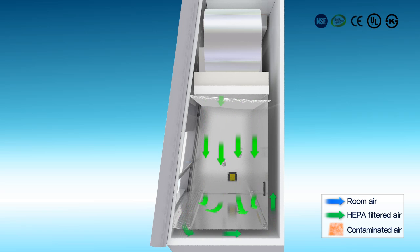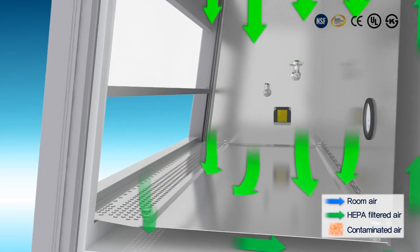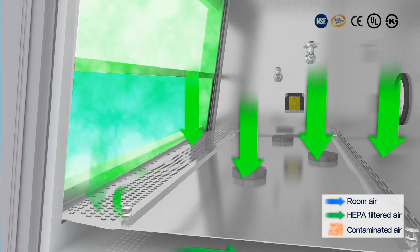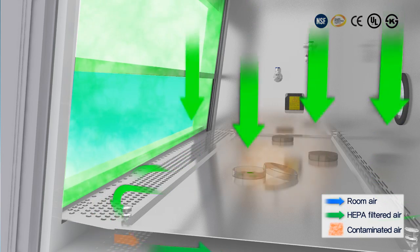The air supplied to inside chamber protects the researcher by forming an air curtain on the front space of the biological safety cabinet.